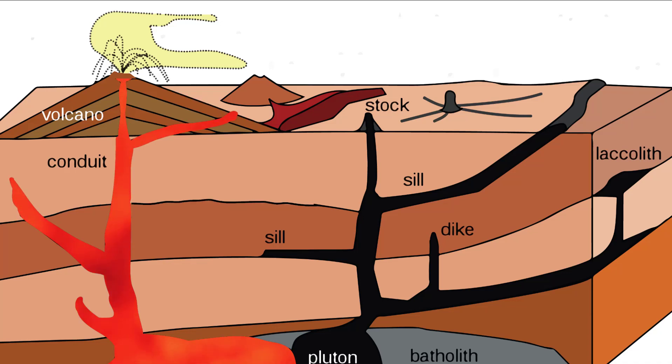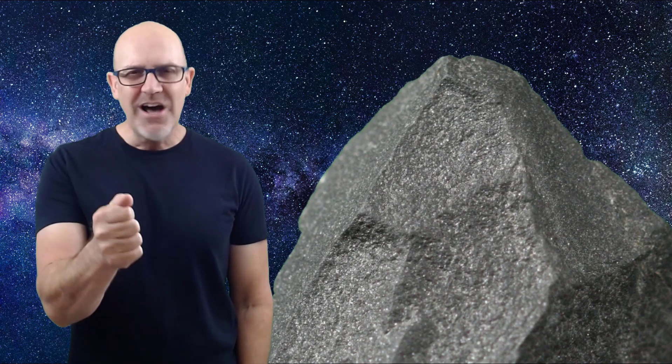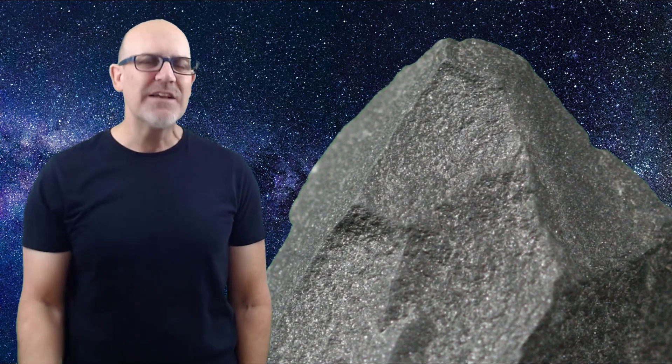When the magma erupts out of the volcano, we call it lava. And when lava cools, it crystallizes really fast, unlike the magma that hardens or crystallizes inside the earth. Extrusive igneous rocks are different than intrusive igneous rocks, like granite, where the crystals can be easily seen. Lava typically cools so fast that the crystals are really small, too small even to be seen with naked eyes, and you're going to need a magnifying glass.